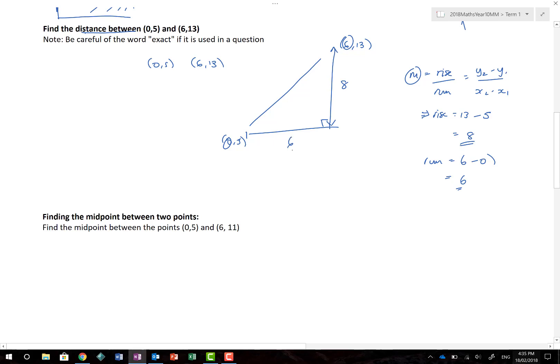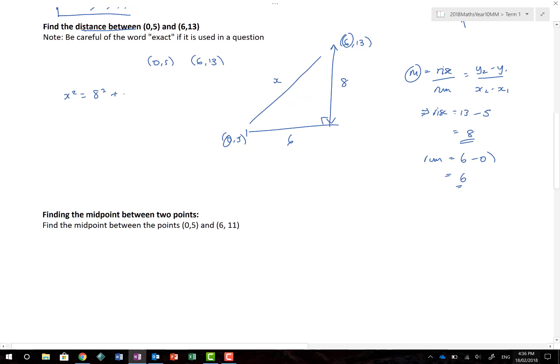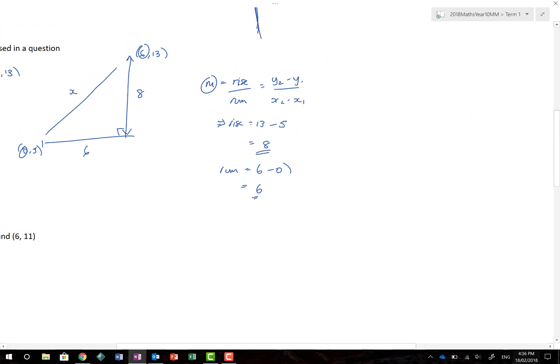And so, I can now say that, let's call that x, that x squared is equal to 8 squared plus 6 squared. 8 squared is 64. 6 squared is 36. And don't forget to write x squared all the way down here is equal to 100. And that gives x is equal to plus or minus the square root of 100. Now, if you have no idea why I've written plus or minus, let's just go back.